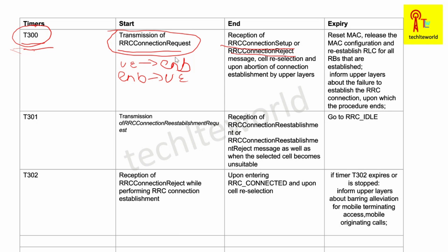There are other conditions where T300 ends as well: upon cell reselection, and upon abortion of connection establishment by upper layers. Upon expiry of T300, the UE will reset the MAC, releasing all MAC configuration, and will re-establish RLC for all radio bearers that had been established.